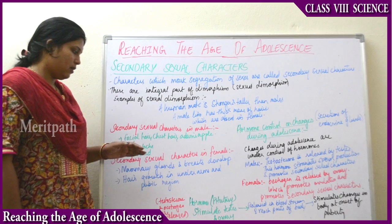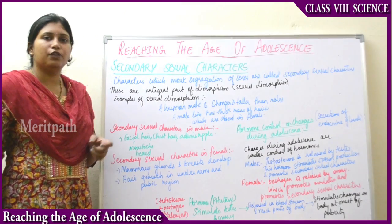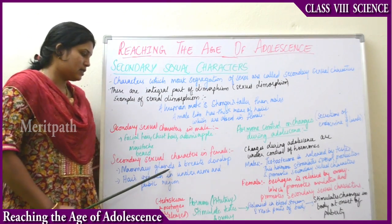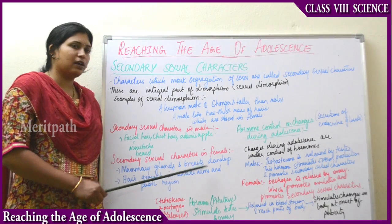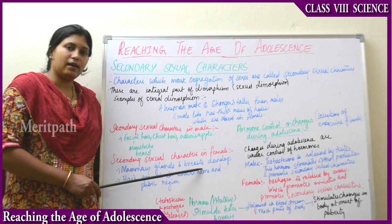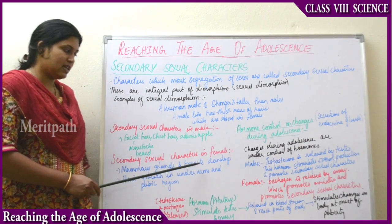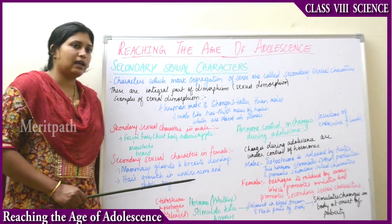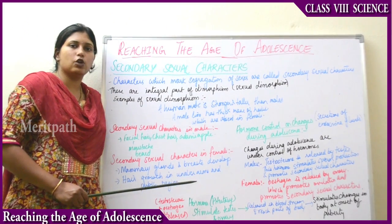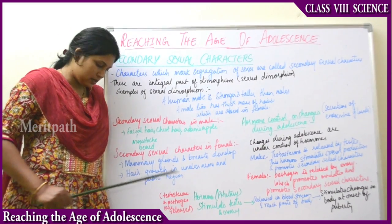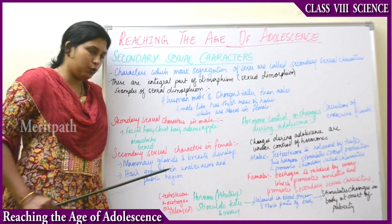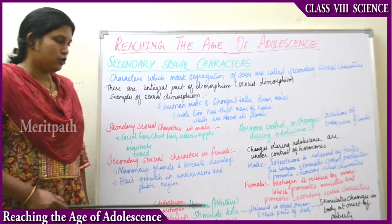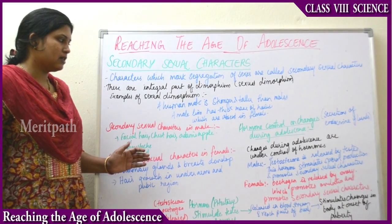Next, secondary sexual characters observed in females during puberty: mammary glands and breasts begin to develop, and the size of the chest increases. Hair growth is also observed in the underarms as well as in the pubic region, the region above the thighs. These are the changes in females.